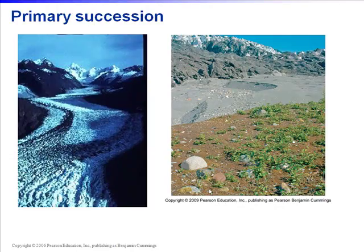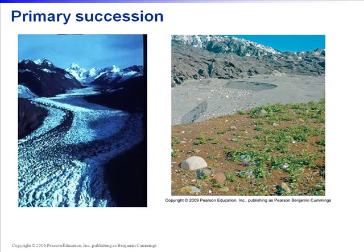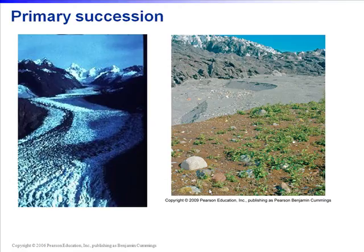Communities respond to disturbance in different ways. A community that resists change and remains stable despite disturbance is said to show resistance. Alternatively, a community may show resilience, meaning it changes in response to disturbance but later returns to its original state. When you have a fairly intense disturbance, you get the process of succession. For many places, we have an understanding of what will happen after a disturbance — a predictable series of changes — and we call that succession.